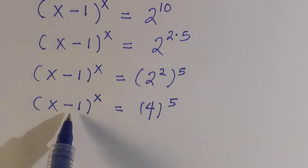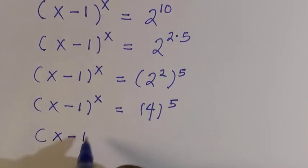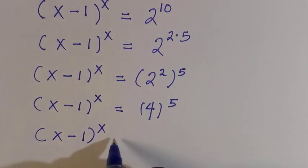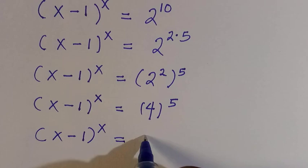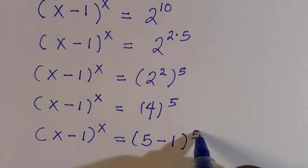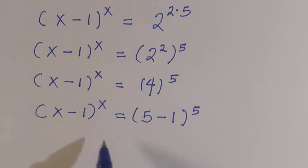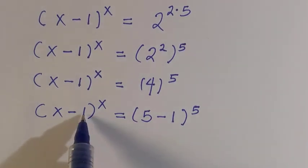I want to make this look the same as this, so what I will do here is we have (x-1)^x equals, you can consider this as (5-1) to the power of 5. Now we can compare them: x-1 equals 5-1.